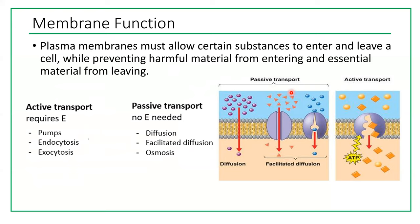In passive transport, we always have movement from high concentration to low concentration — we call this moving down the concentration gradient. In active transport, we always need a protein if we're talking about pumps. Endocytosis and exocytosis are the movement of substances inside vesicles. Active transport requires ATP and moves substances from low concentration to high concentration — against the concentration gradient.